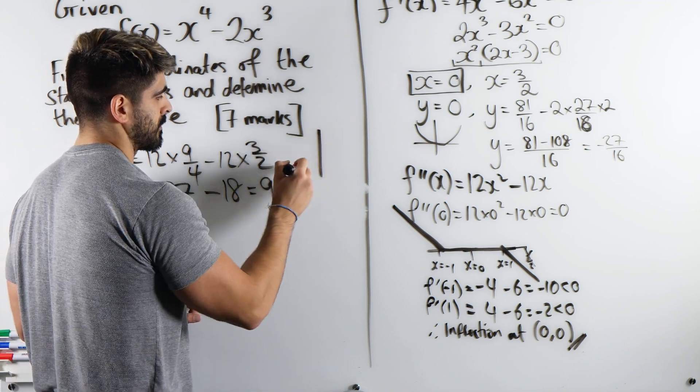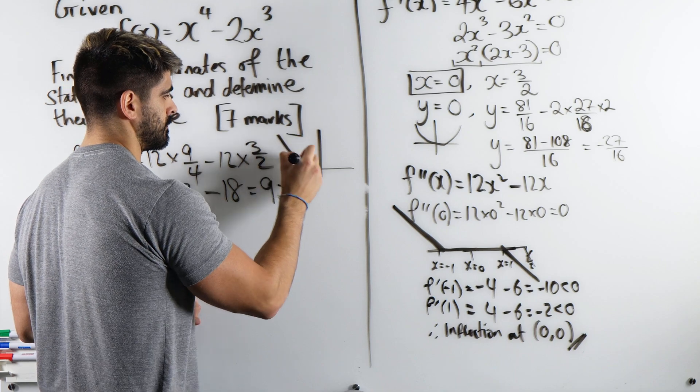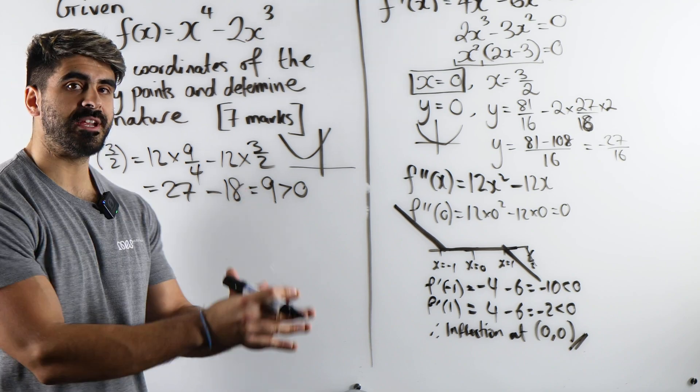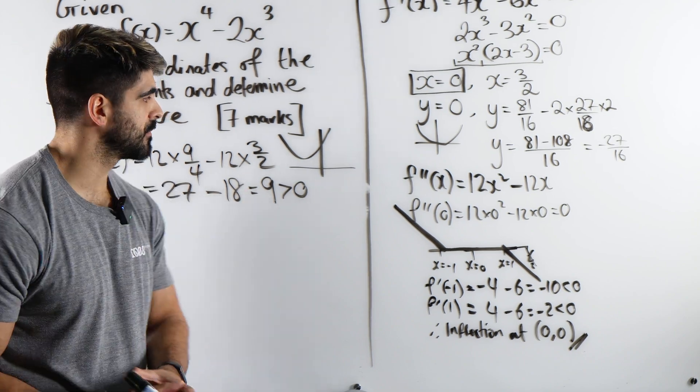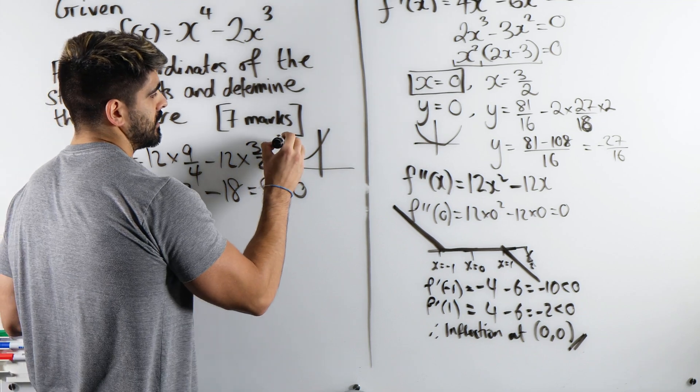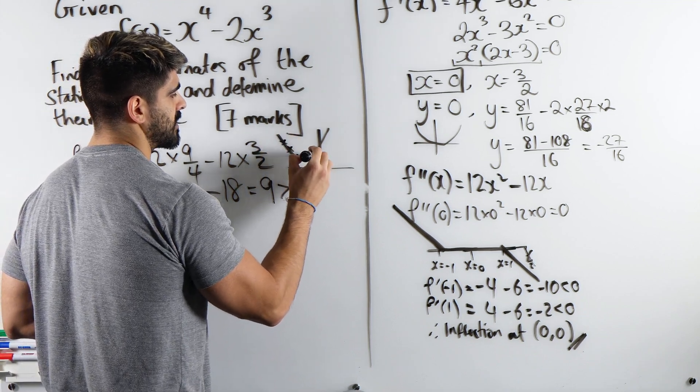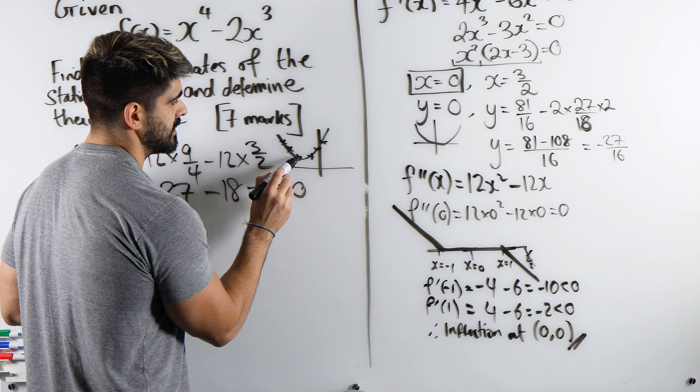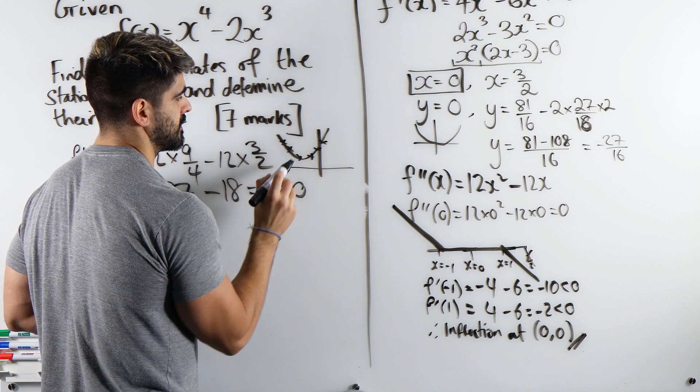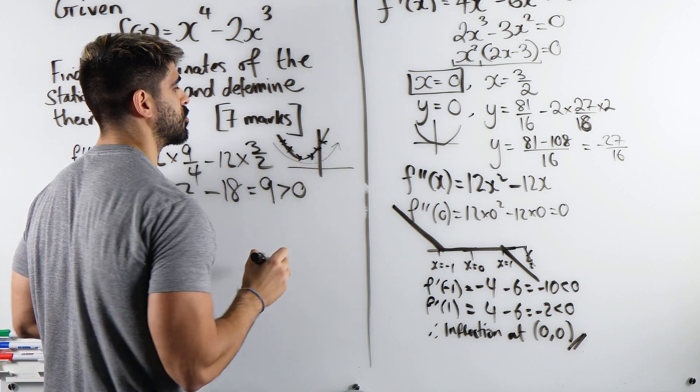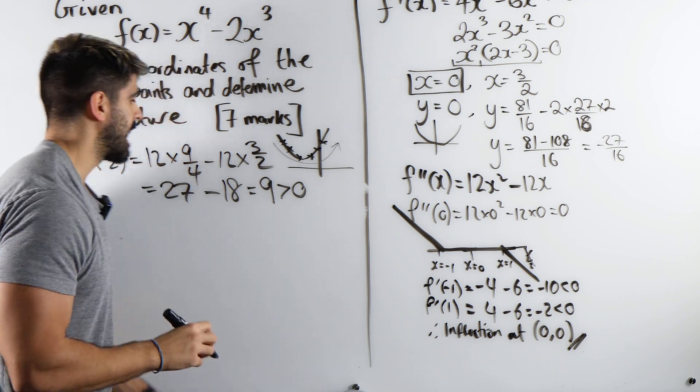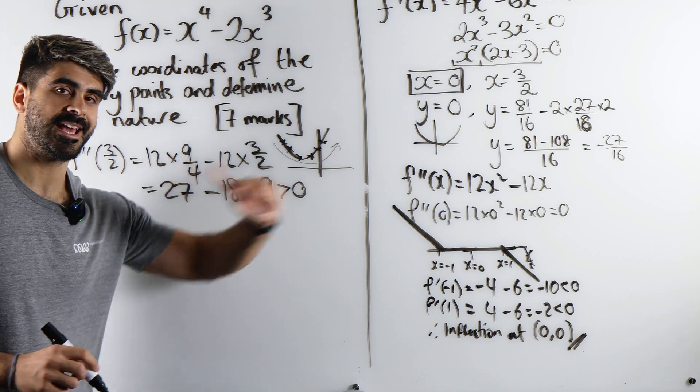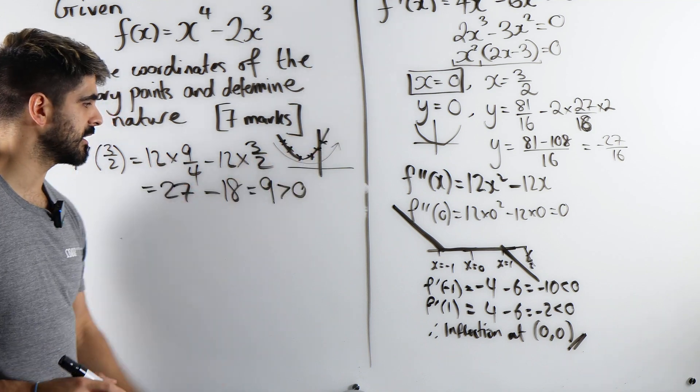Very simple. All this is saying, the second derivative is measuring how the gradients are changing over time. Now, as we go along this curve, what's happening to the gradients? Negative, negative, zero, positive, positive, positive. They're increasing. The gradients are increasing. And that is what this is telling us. The second derivative is positive, meaning they're increasing. And that's why it's a minimum.